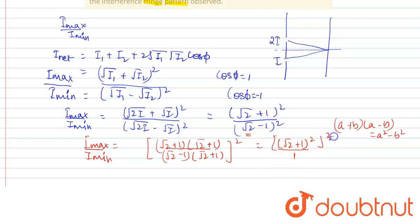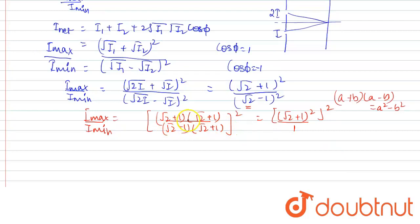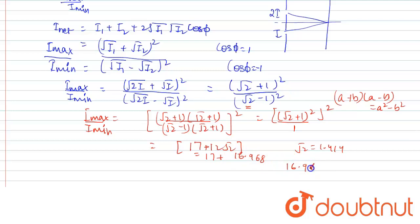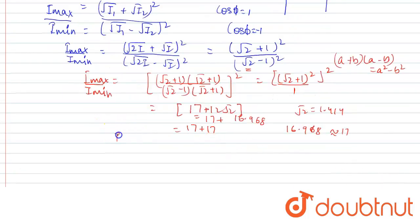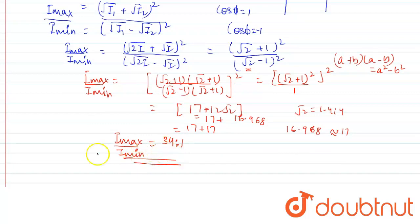On solving (√2 + 1)² fully, we get 17 + 12√2. Putting √2 ≈ 1.414, we get 17 + 16.968 ≈ 17 + 17 = 34. Therefore, I_max / I_min = 34 : 1.